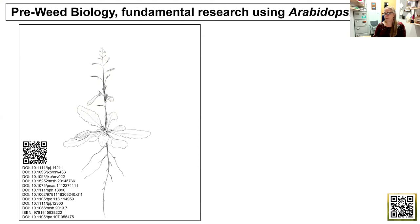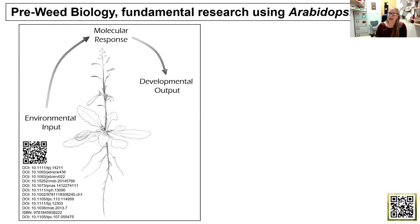Before I started being a weed molecular biologist, I was just a plain old plant molecular biologist, and the work that I was doing was fundamental research using Arabidopsis thaliana. The questions I was asking were really: how do environmental inputs lead to developmental outputs? What was the molecular response leading to these changes? How could the plant sense and respond to changes in the environment in a way that allowed it to survive?